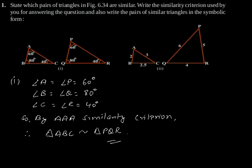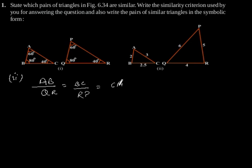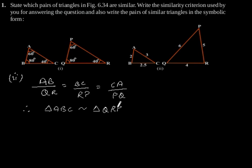Now the second part. Considering figure 2, we can see AB/QR equals BC/RP equals CA/PQ. Therefore triangle ABC is similar to triangle QRP by SSS similarity criterion.